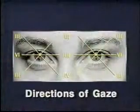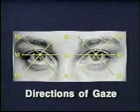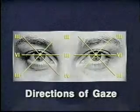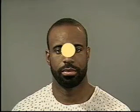Now check the extraocular movements in the six cardinal directions of gaze. From two to three feet in front of the patient, ask him to look at your finger as it moves to the patient's far right, to the right and up, and to the right and down.